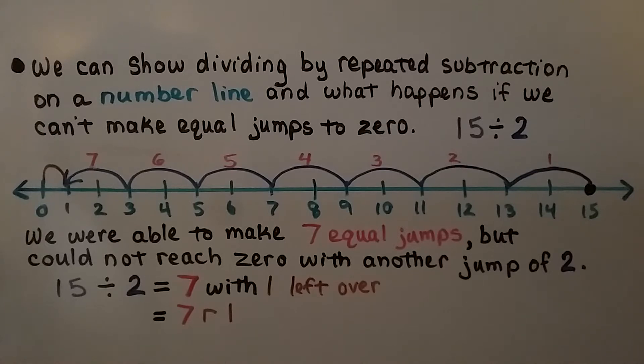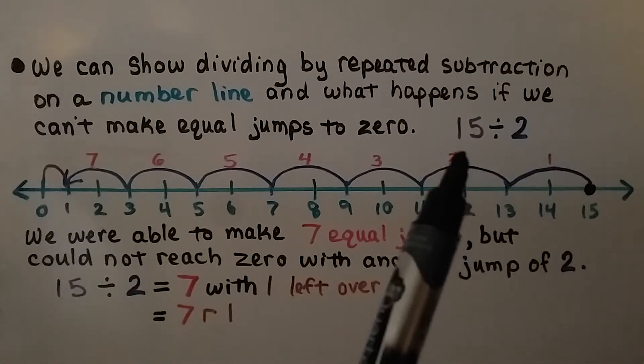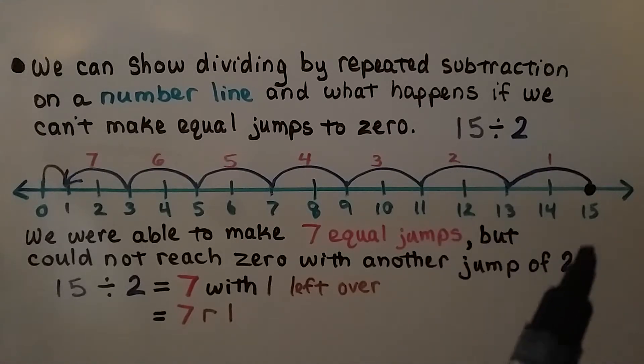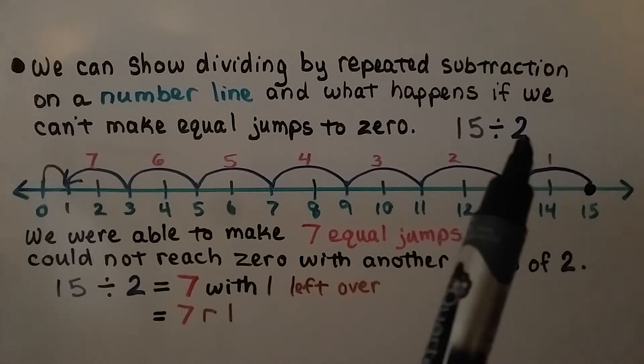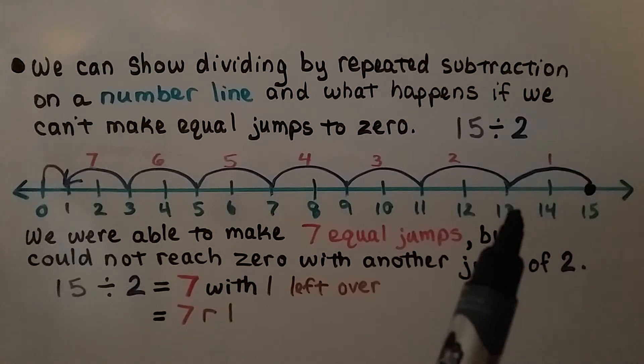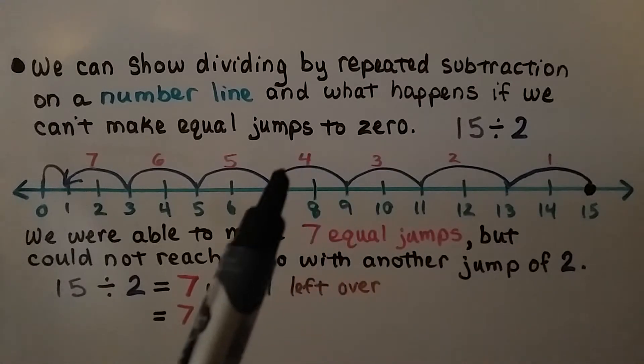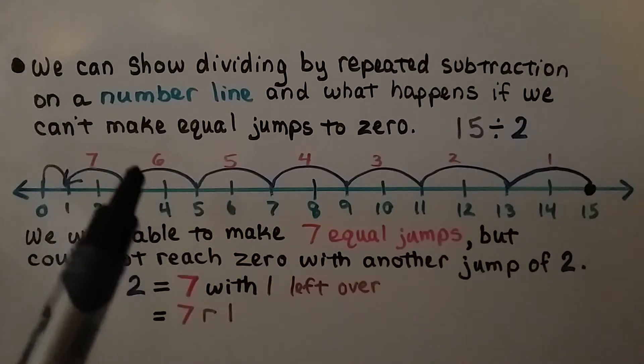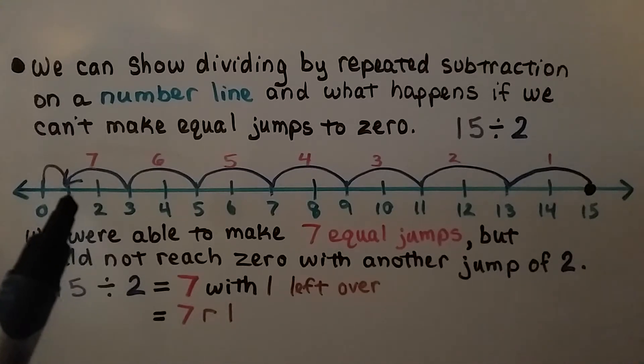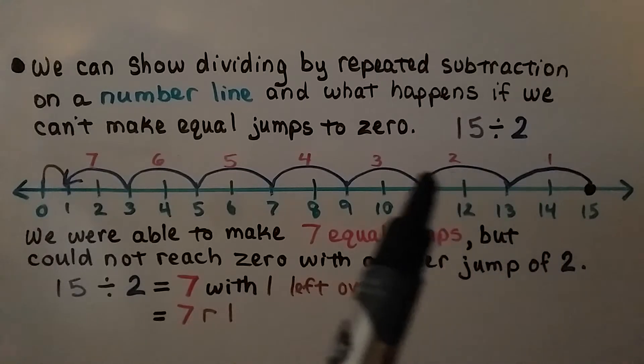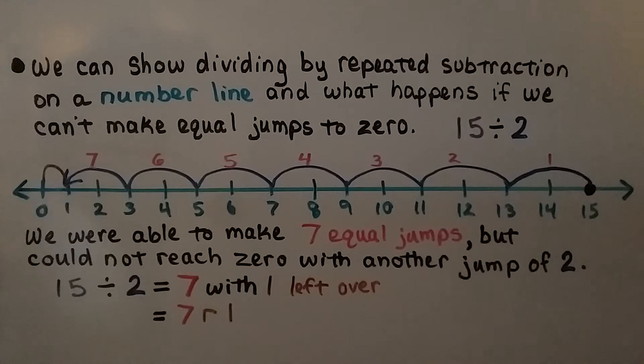We can show dividing by repeated subtraction on a number line and what happens if we can't make equal jumps to 0. We're going to use a small division problem as our example. We have 15 divided by 2. We start at 15, the dividend, and the size of our jumps are going to be 2. So we go 1, 2. That's one jump. We go back to 13. We jump another 2. Now we're back at 11. We do it again, then 9, then 7, then 5, then 3. Then we land on a 1. We can't jump 2 anymore, so we stop at 1. How many jumps of 2 did we make? 1, 2, 3, 4, 5, 6, 7. We were able to make 7 equal jumps, but we could not reach 0 with another jump of 2. There was only a little 1 jump left. So our quotient is 7 with 1 left over. We have 7 remainder 1.